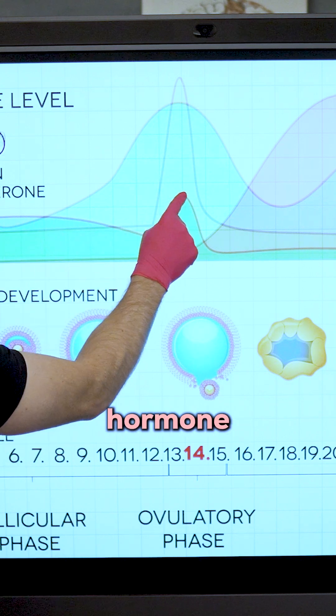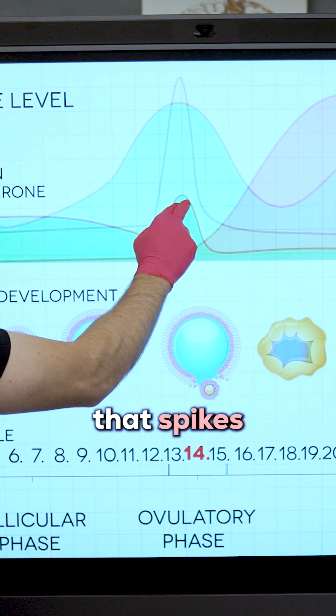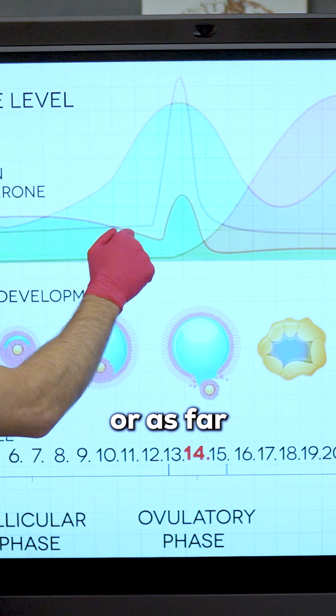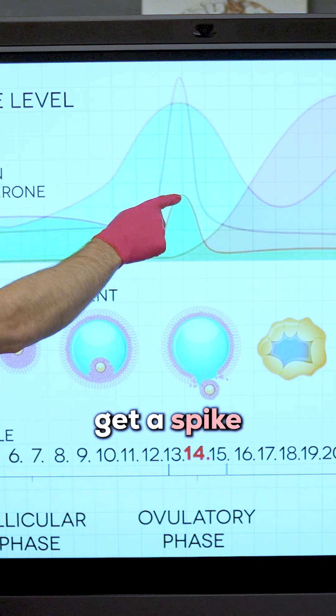Here is the follicle-stimulating hormone right there. And again, that spikes as well. Not quite as high as luteinizing hormone, but we still get a spike.